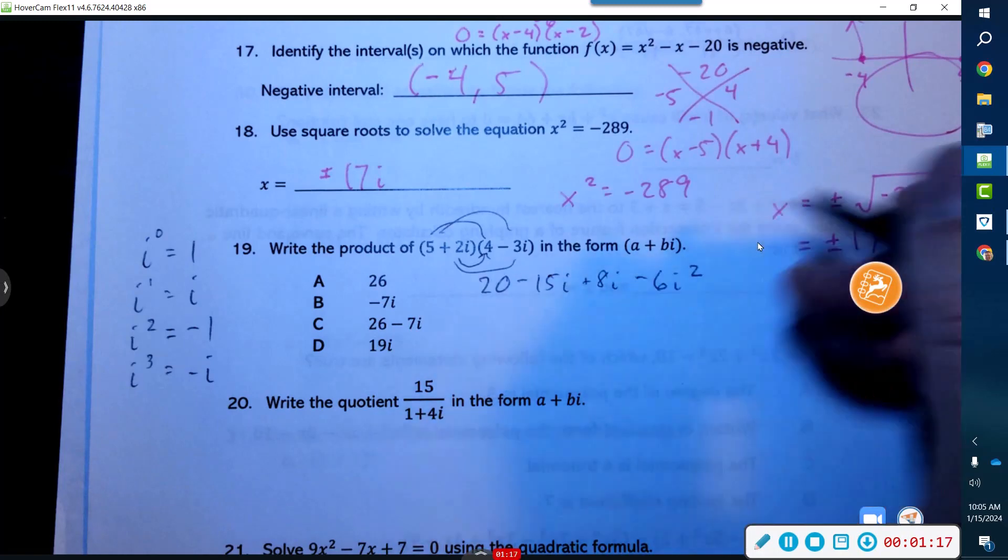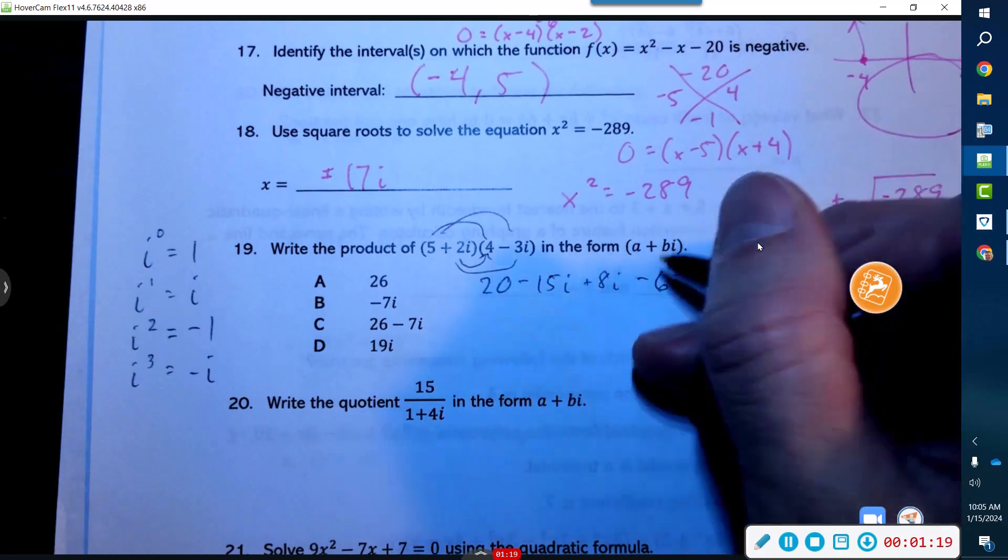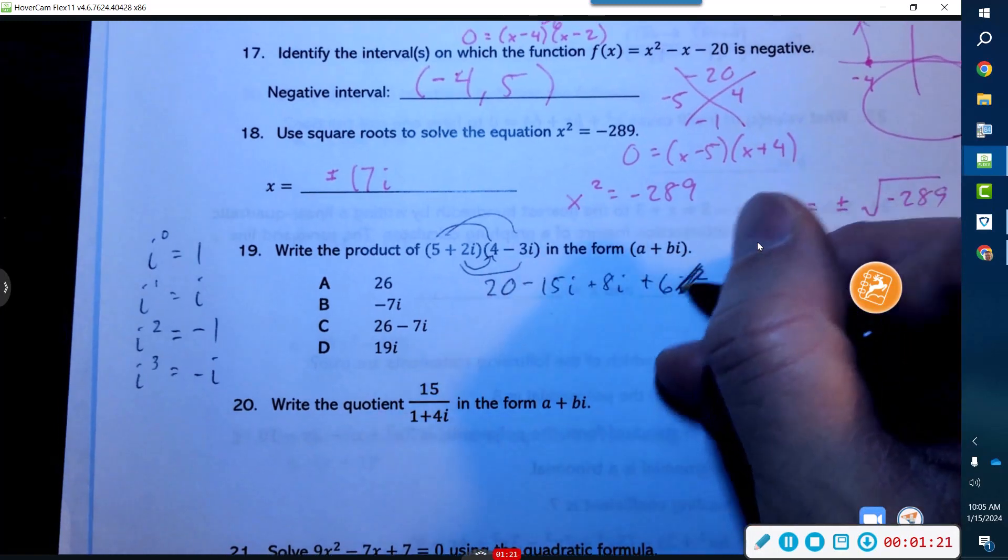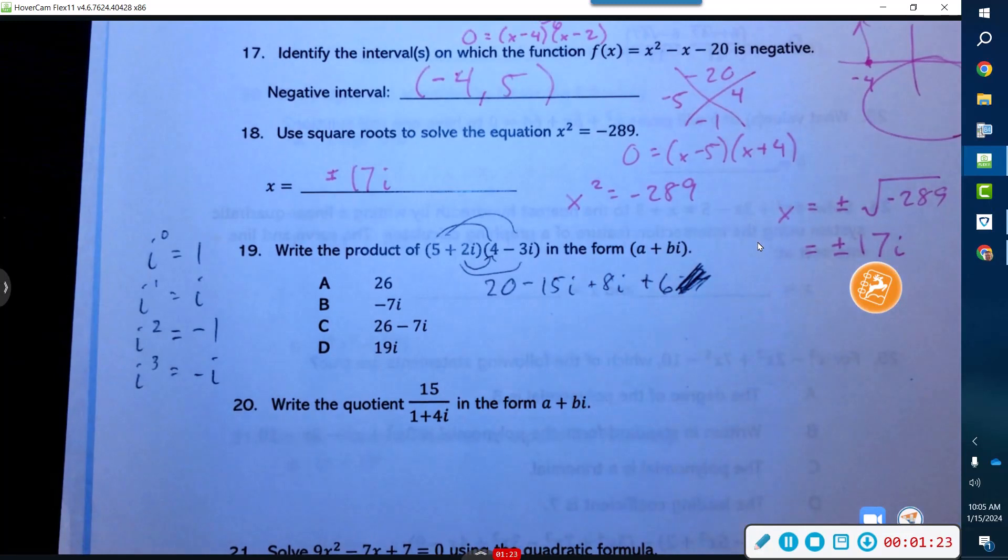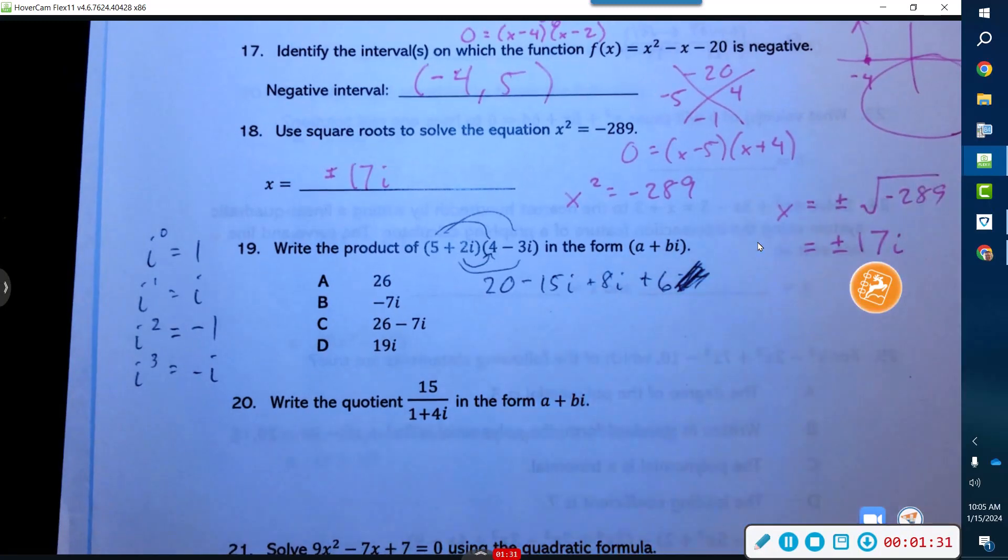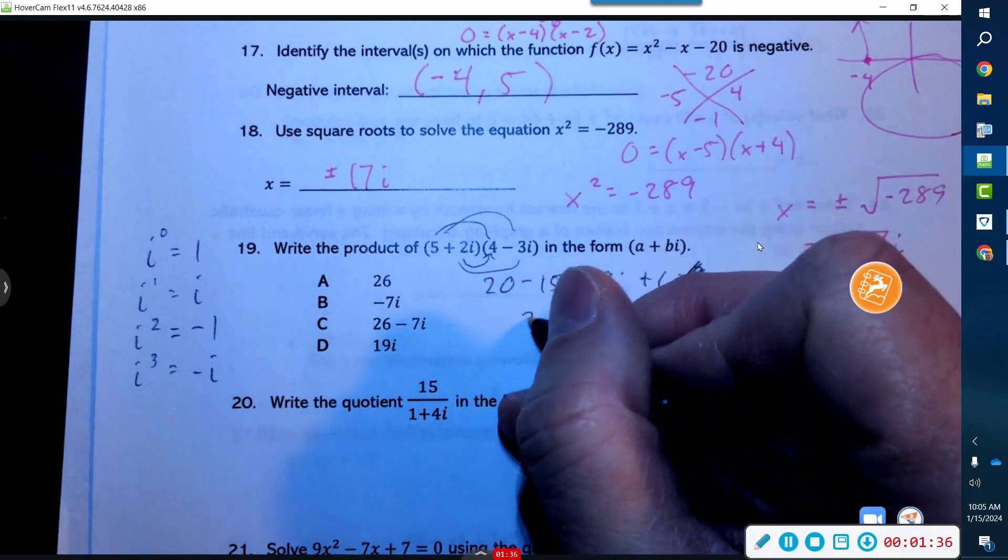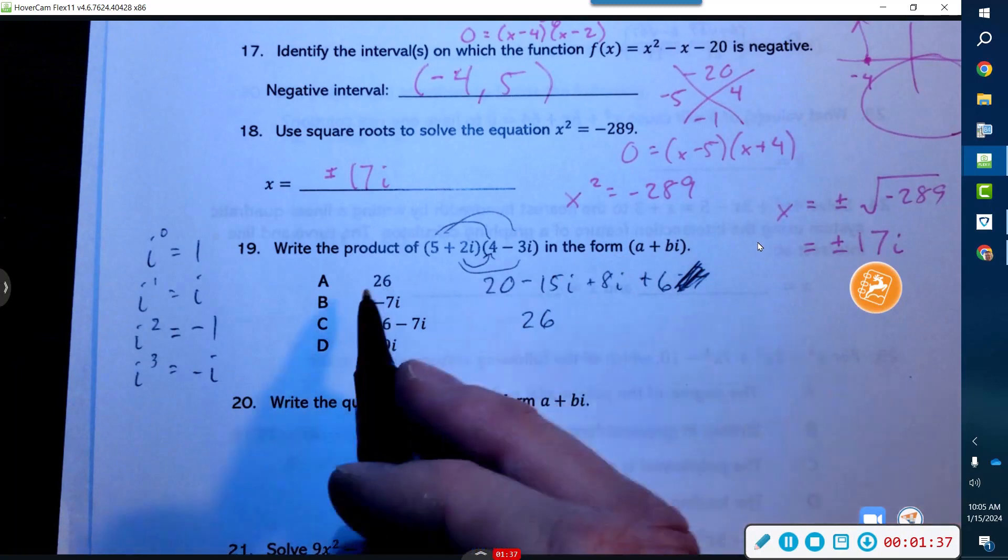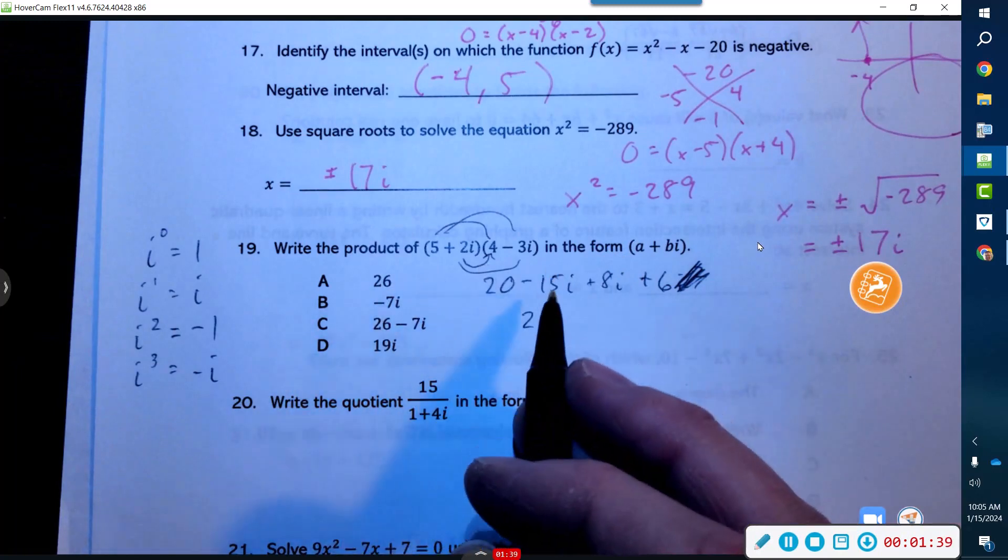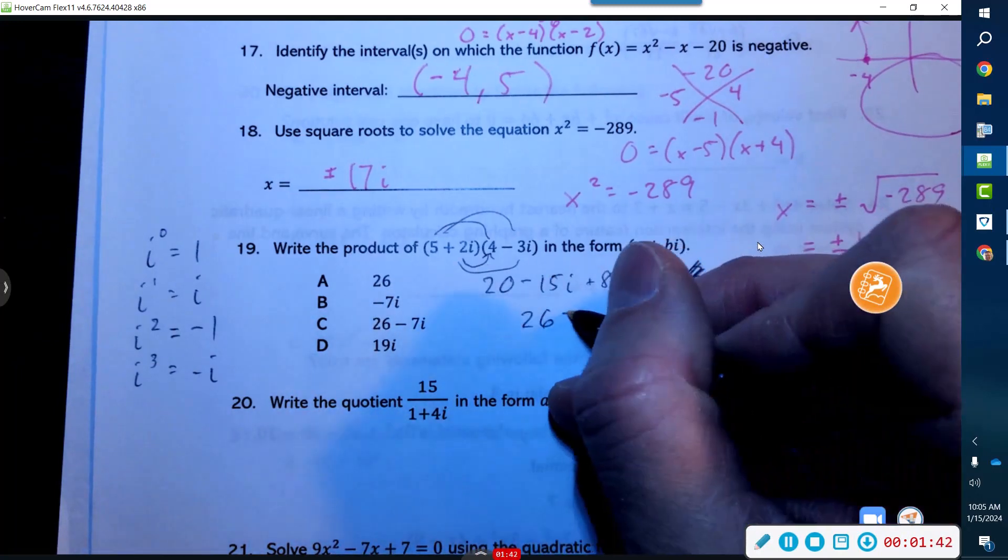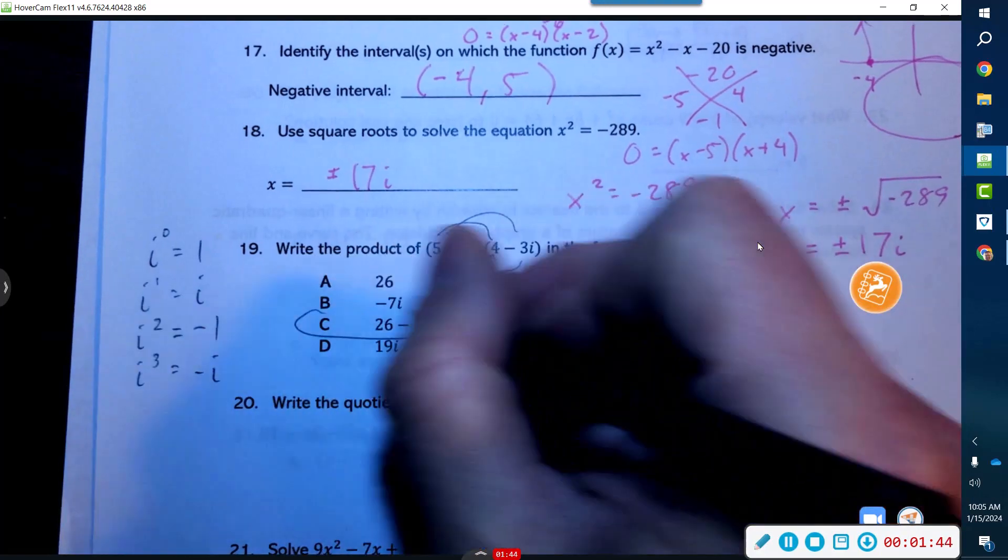Now don't worry about this guy—i squared is actually negative one, so really what you got here is a plus 6. The i squared did a placeholder for you and turned you 180 degrees when you square him. This means I can add the 20 and the 6 for 26. These guys still have to be combined together—that is minus 7i.